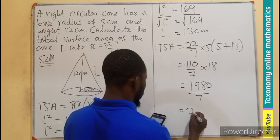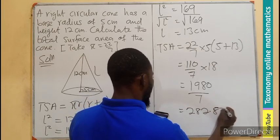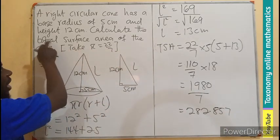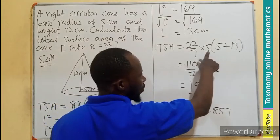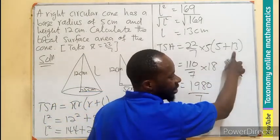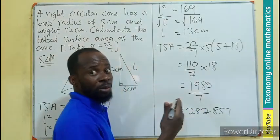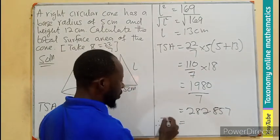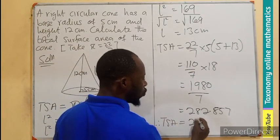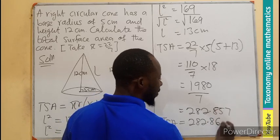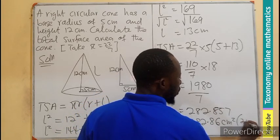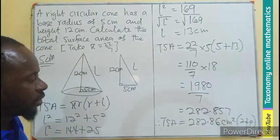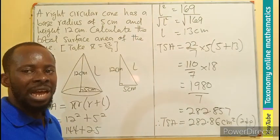And now it will give us 282.857. So in this case, we are looking for total surface area. So don't forget, this area is going to be centimeter times centimeter which will give us centimeter squared. Therefore, total surface area is going to be 282.857, or 282.86 centimeters squared to two decimal places.